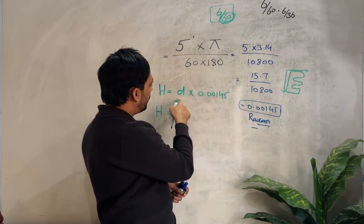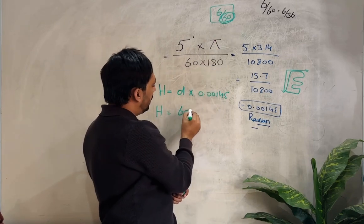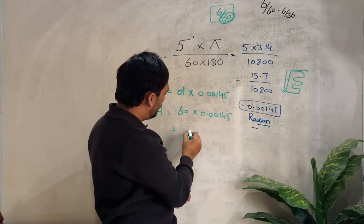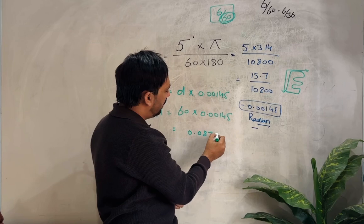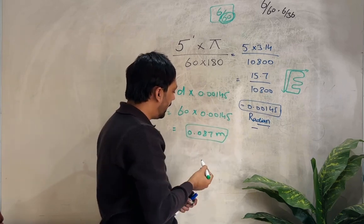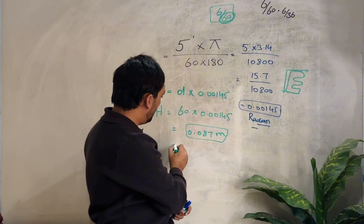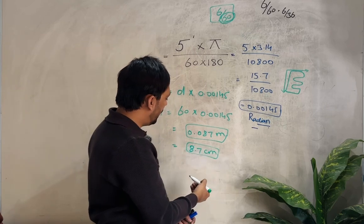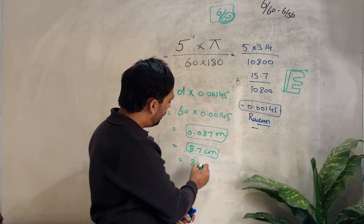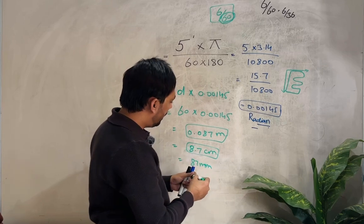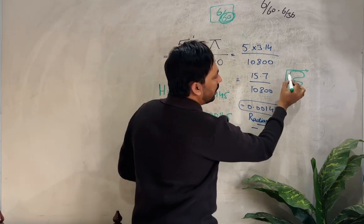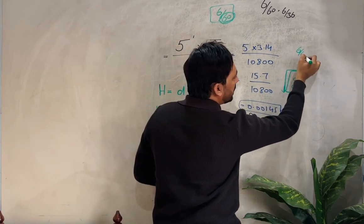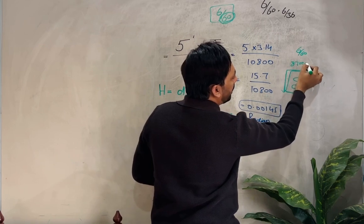To find h, we multiply the denominator 60 by the constant 0.00145: 60 × 0.00145 = 0.087 meters. Converting to centimeters gives 8.7 cm, or in millimeters, 87 mm. So the width or height of the first optotype on the Snellen chart, representing 6/60, will be 87 millimeters.